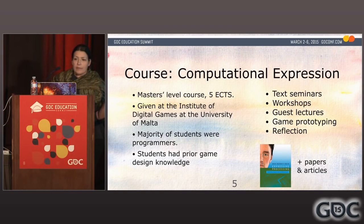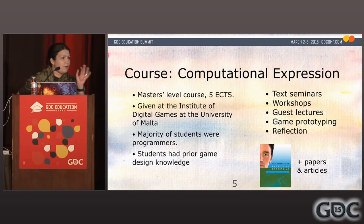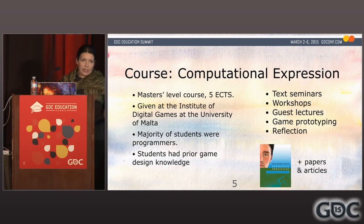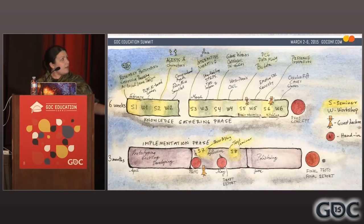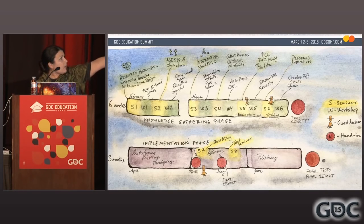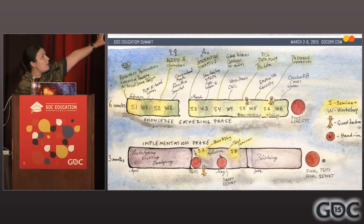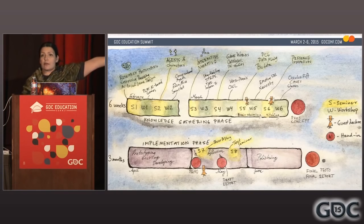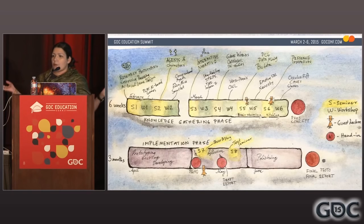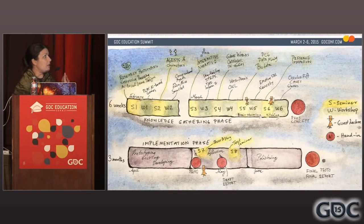For the course, we used the great book Expressive Processing by Noah Wardrip-Fruin as our red thread in our tech seminars. We had workshops and some guest lectures. The course was divided into two main parts, where the first six weeks was an intense period of knowledge gathering — having seminars and workshops. Those were the technological palette I wanted to give my students: the technologies that exist and could be useful for game design.